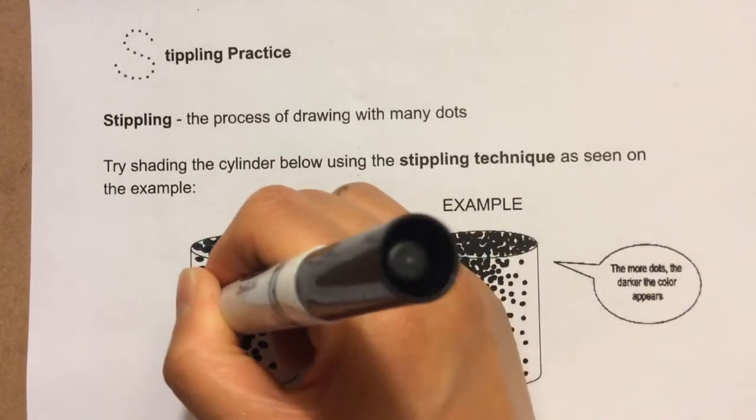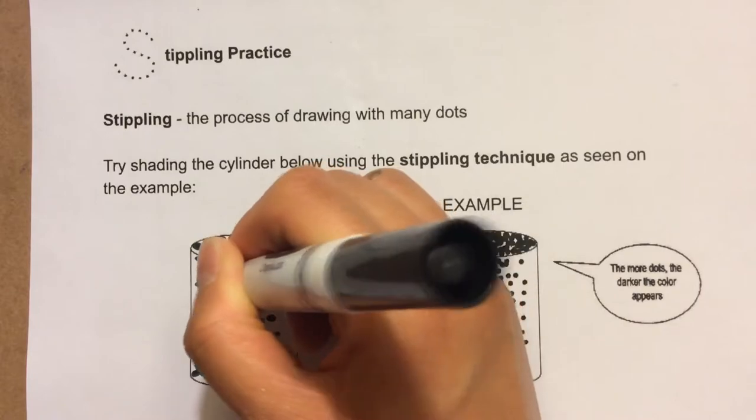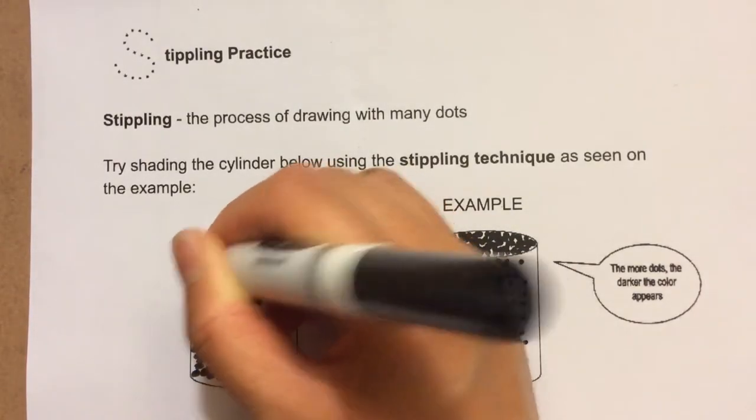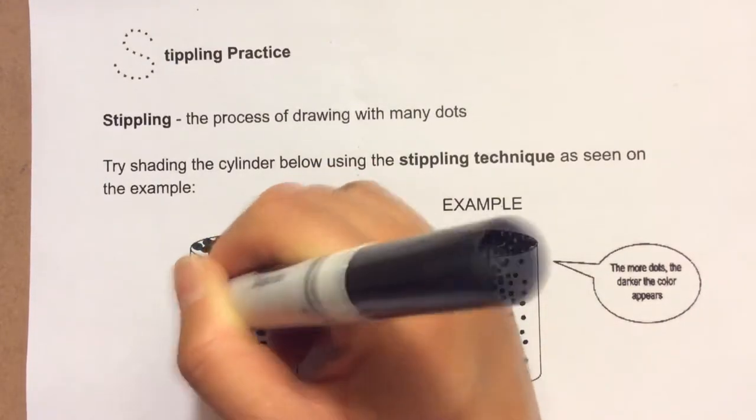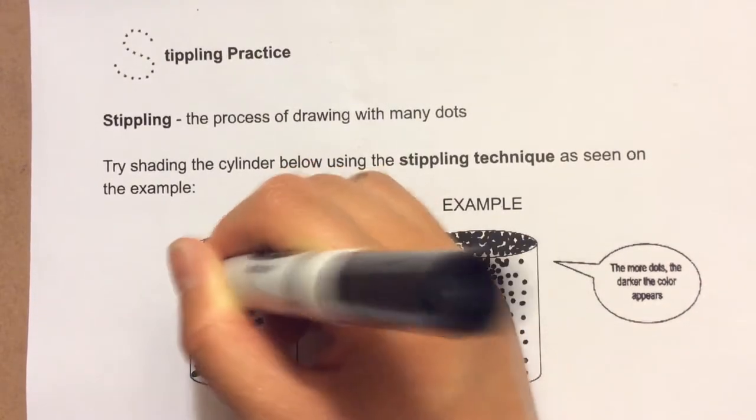So once again, I'm looking at the white spaces between each dot and I'm adding more dots. The more dots there are, the darker it is.